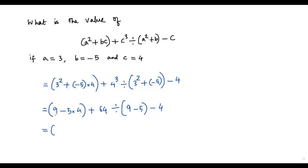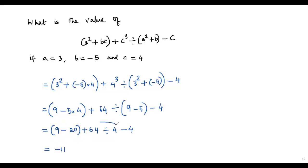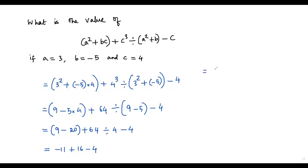Inside the bracket in the numerator, we have subtraction and multiplication — do multiplication first: 5 times 4 is 20, giving 9 minus 20 plus 64. In the denominator bracket: 9 minus 5 is 4, minus 4. Then the numerator: 9 minus 20 is negative 11, then negative 11 plus 64 is... evaluating, 64 divided by 4 is 16. Combining: negative 11 plus 16 is positive 5, and 5 minus 4 is 1. The value of the given expression is 1.